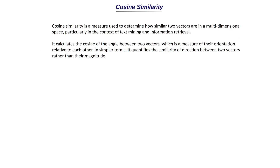Finally, we have cosine similarity, which also has a lot of use. Cosine similarity is a measure used to determine how similar two vectors are in a multi-dimensional space, particularly in the context of text mining and information retrieval. A key application is in RAG — Retrieval Augmented Generation — where the entire document text is converted into vector embeddings and the question asked is also converted into a vector embedding. We find the closest vectors to provide the answer to the question.